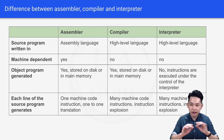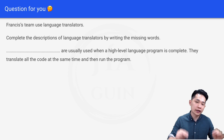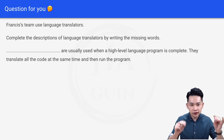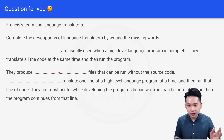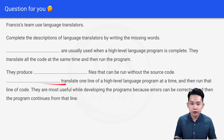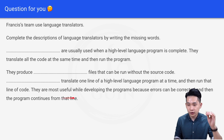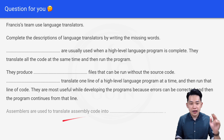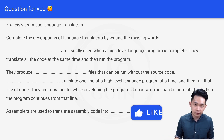Finally, let's look at a past paper question. Compilers are usually used when a high level language program is complete — they translate all the code at the same time and then run the program, producing executable files that can be run without the source code. Interpreters translate one line of a high level language program at a time and then run that line; they are most useful while developing programs because errors can be corrected and the program continues from that line. Assemblers are used to translate assembly code into machine code. Try to get the answers from the video and comment below. Thank you, and I'll see you again. Bye-bye!